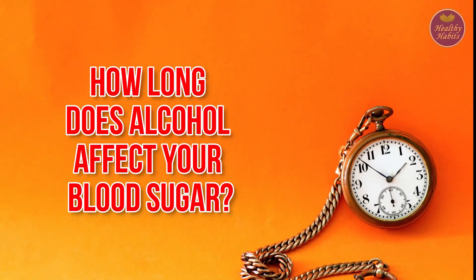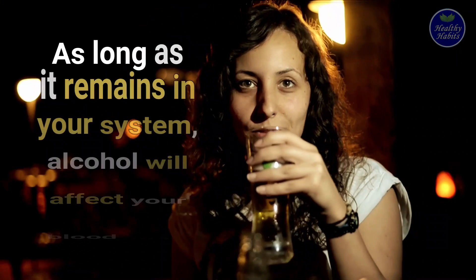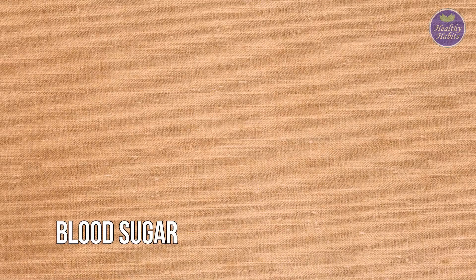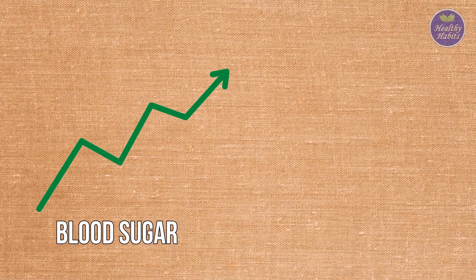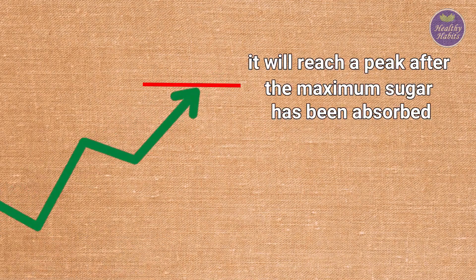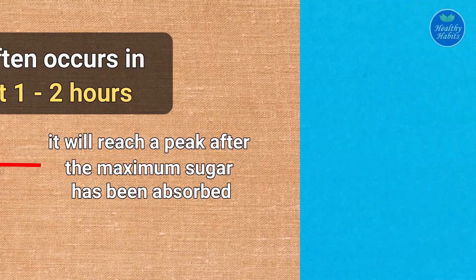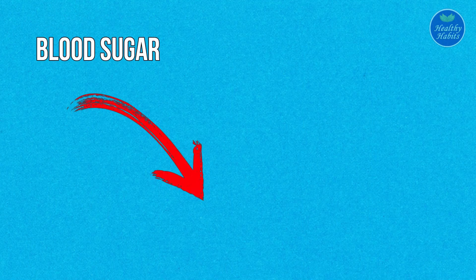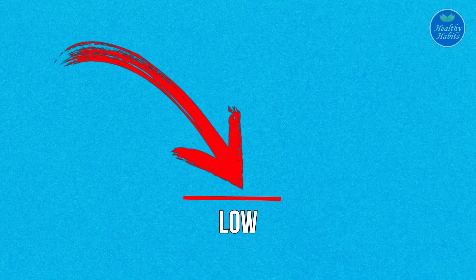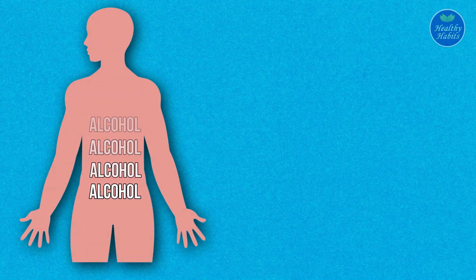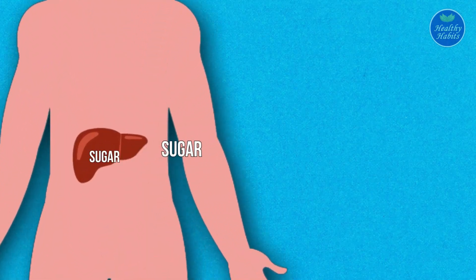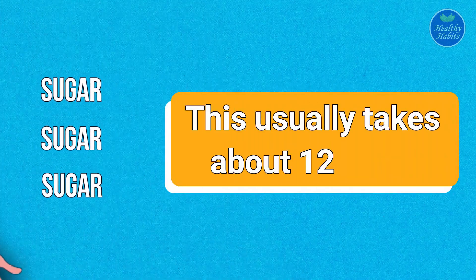How long does alcohol affect your blood sugar? As long as it remains in your system, alcohol will affect your blood sugar. Your blood sugar's response to alcohol will rise gradually as the sugar in alcohol is digested, then reach a peak after the maximum sugar has been absorbed. This often occurs in about one or two hours. As previously explained, your blood sugar will drop following the initial increase. Your blood sugar will remain low as long as alcohol interferes with your liver's regular function. Once enough alcohol has been removed from your body, your liver will regain its ability to release sugar. This usually takes about 12 hours.